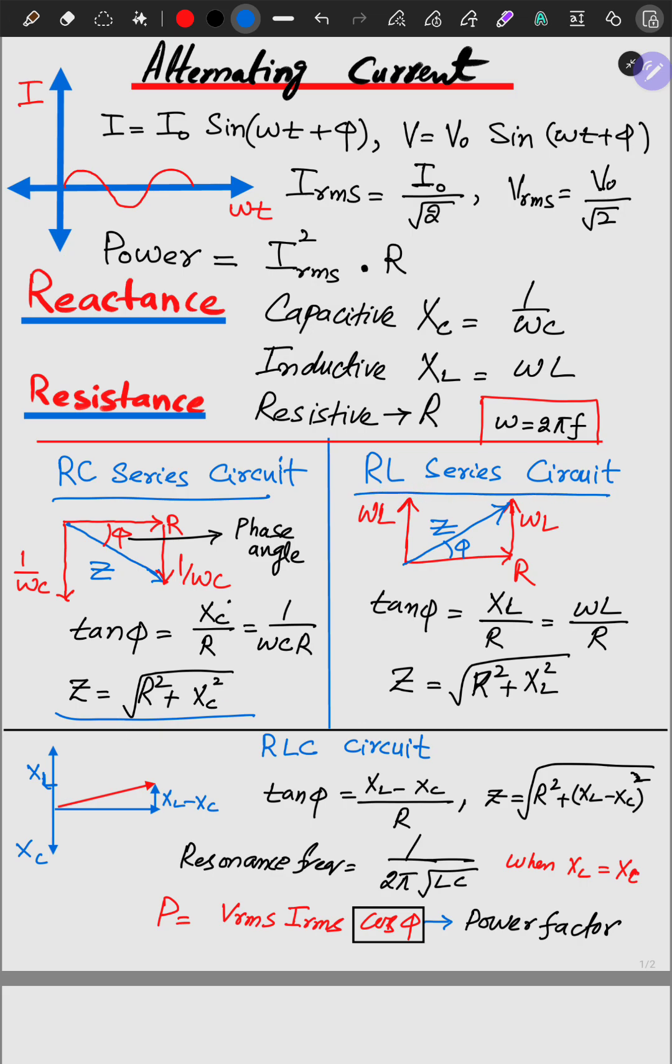While in the case of RL series circuit, the impedance diagram looks like this. The tangent phi is equal to perpendicular by base XL by R omega L by R, and the impedance becomes R square plus XL square whole square root.